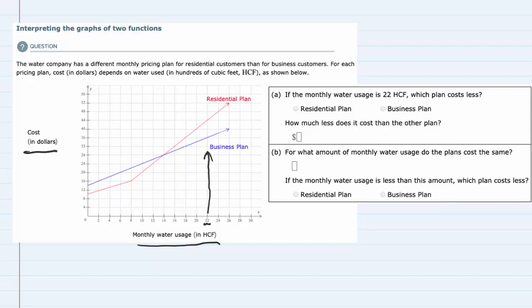We can tell that the business plan here has the lower value, which is $36 when they use 2200 cubic feet. The residential plan, which is higher for 2200 cubic feet, reading across there, is $44.